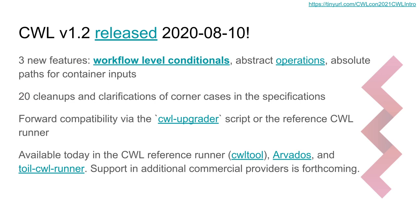We do release new standards versions over time. We just had our most recent release last August, version 1.2. The major feature is workflow-level conditionals — deciding to go to a different next step based on the results of this or other steps. We're already seeing implementation of these new features in the reference runner and two open-source production implementations, and CWL 1.2 is coming very soon for some commercial implementations as well. We do guarantee forward compatibility: you can always upgrade files written in older versions of the CWL standards to newer versions without losing anything. We have a script that does that, and many runners will do it automatically.